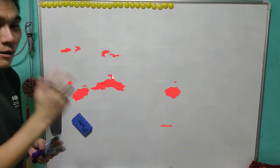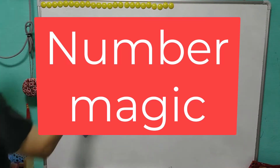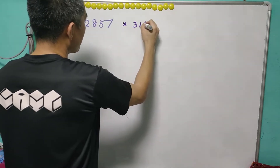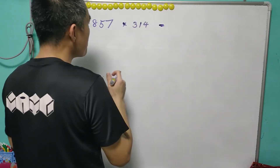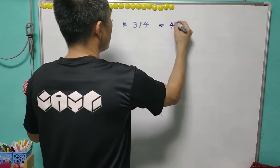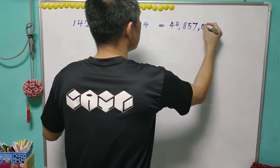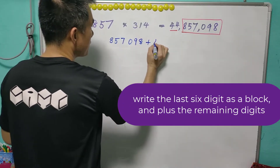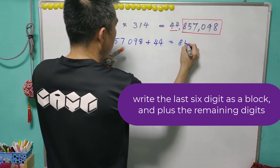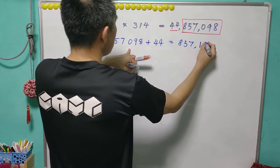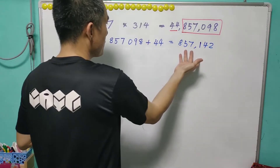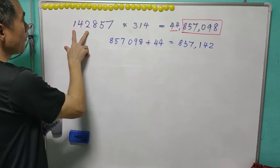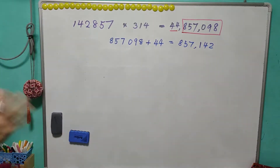In today's lesson we are going to talk about number magic, and this number is 142857. You can multiply it with any number you like — let's say 314 — and you get a new number. In this case it is 44857089, so we write 857089 plus 44, which gives 857142. That is actually 142857 — a permutation of the same number, just reordered.